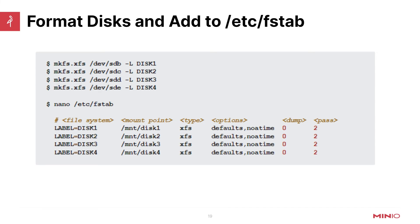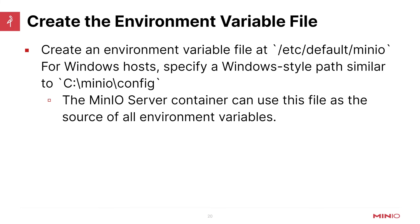Here's an example configuration from our website. You'll see mkfs.xfs on all of the listed disks, and then you take those labels and mount them inside /etc/fstab so they come back online in the same order on reboot. You can use labels or UUIDs — you need to be familiar with Linux concepts to get this right for your environment. We will create an environment variable file at /etc/default/minio, and MinIO server container can use this file as a source of all environment variables, which we'll mount inside the container using Docker Compose.